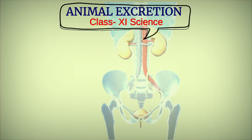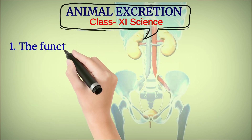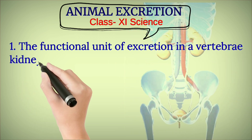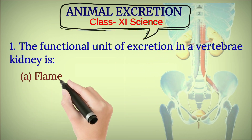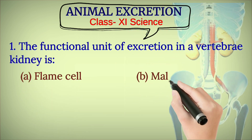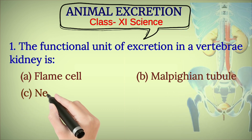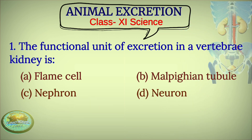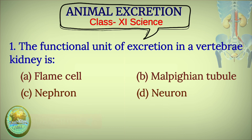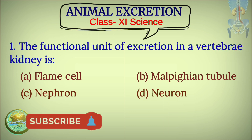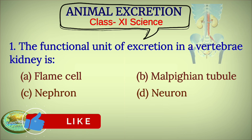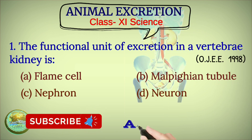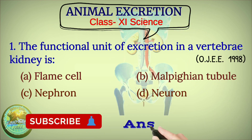Question 1: The functional unit of excretion in a vertebrate kidney is — flame cell, Malpighian tubule, nephron, or neuron? The choice is yours and the right answer you will get after 2 seconds.